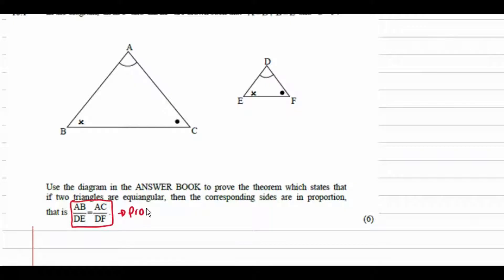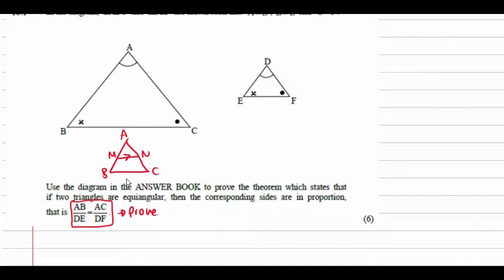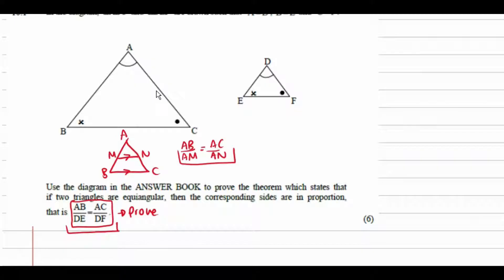When we see proportions like this it should remind us of when we have a triangle and a line drawn parallel to one side of the triangle. If triangle ABC has line MN parallel to BC, then AB over AM equals AC over AN. This is exactly the same structure we need to prove. So the idea is to construct a line, show that it is parallel to one side of the triangle, and use that parallel-line theorem to prove the result.